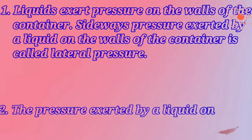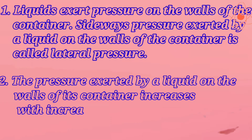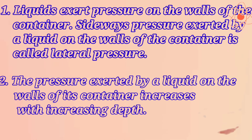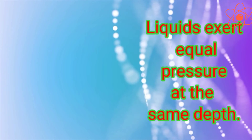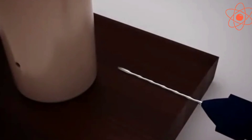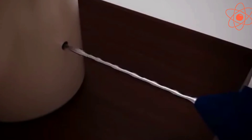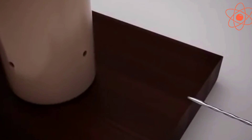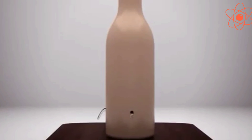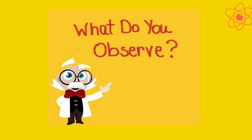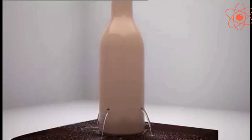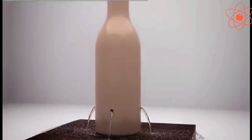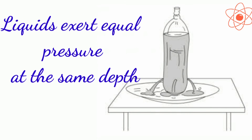The pressure exerted by a liquid on the walls of its container increases with increasing depth, meaning lateral pressure increases with depth. Third characteristic: liquids exert equal pressure at the same depth. Take an empty plastic bottle and drill some holes all around the bottle at the same distance from the bottom. Now fill the bottle with water. You can see that water coming out from all the holes falls at the same distance from the bottle, showing that liquids exert equal pressure at the same depth.